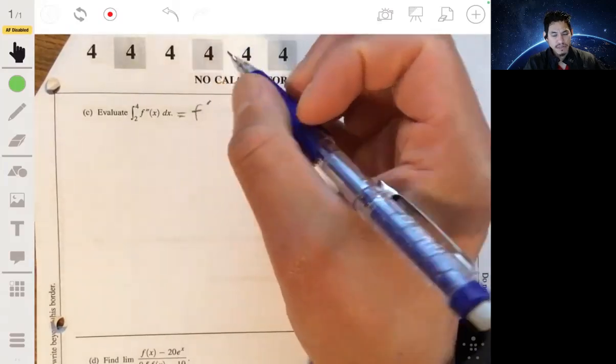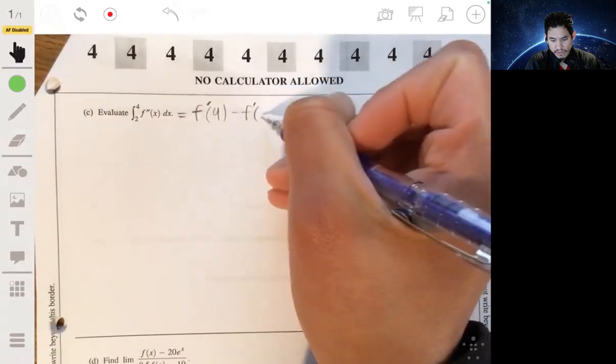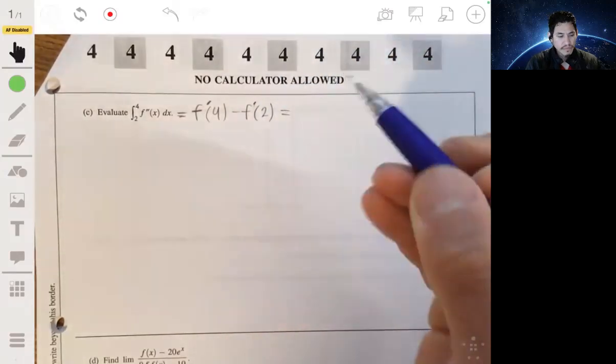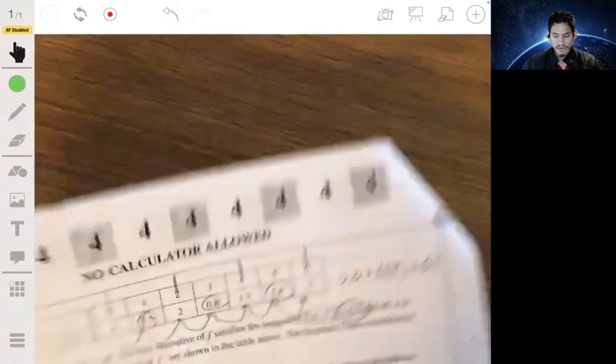And using the first fundamental theorem of calculus, this would be just f prime of 4 minus f prime of 2. And these values are just in the table. These are given in the table. We flip over.